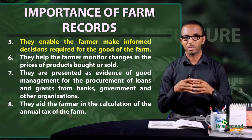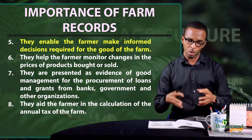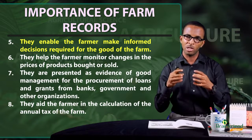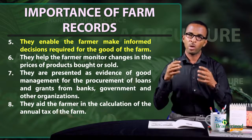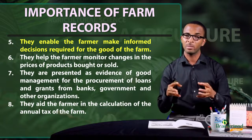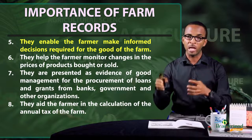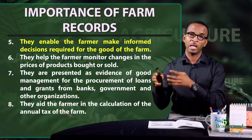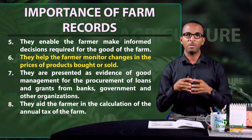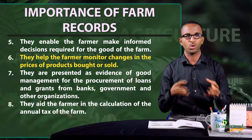A farmer will bring all his records, monitor them, study them, and look at areas in which he needs to make improvements. Whatever decision he makes to improve performance in his farm is an informed decision based on the records he has been keeping. Number six, farm records help the farmer monitor changes in the prices of products bought or sold.